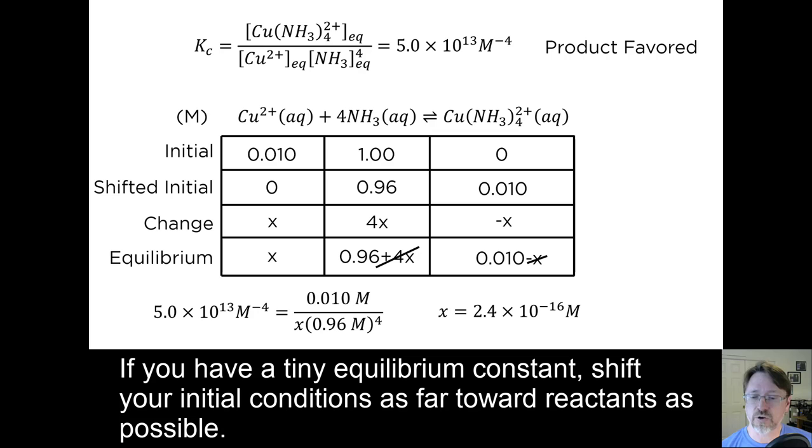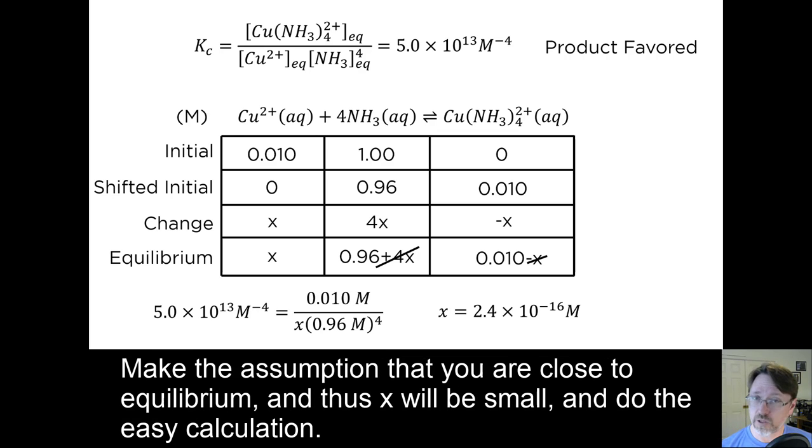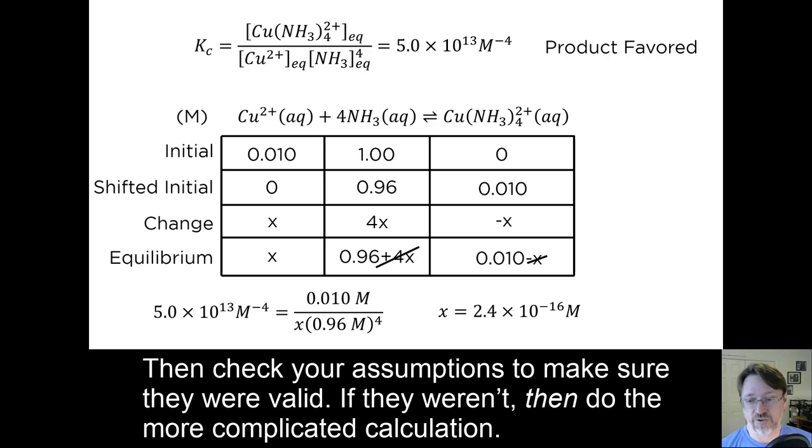Make the assumption that you are close to equilibrium, and thus x will be small, and do the easy calculation. Then check your assumptions to make sure they were valid. If they weren't, then do the more complicated calculation.